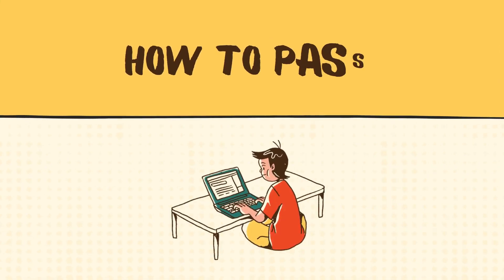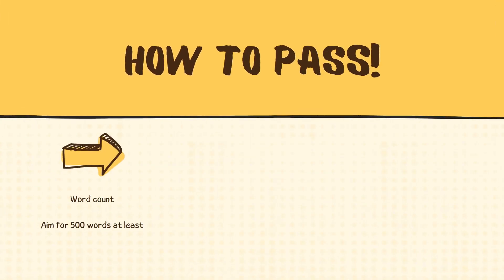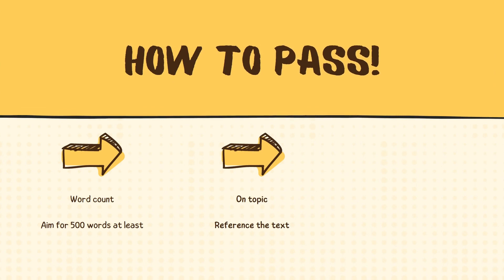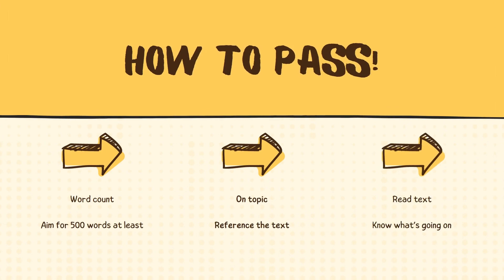First up, how to start passing. This list shouldn't surprise you, but there are a few key things to note. Firstly, make sure you write at least 500 words. Secondly, make sure it's on topic and you reference the text at least a little bit. And thirdly, read the text beforehand so you know what's going on.